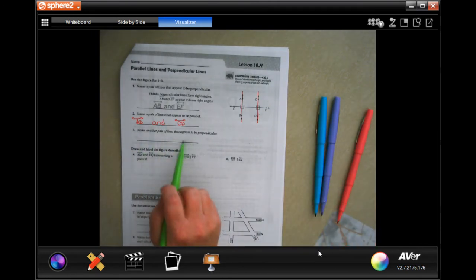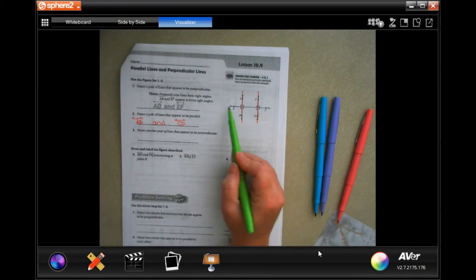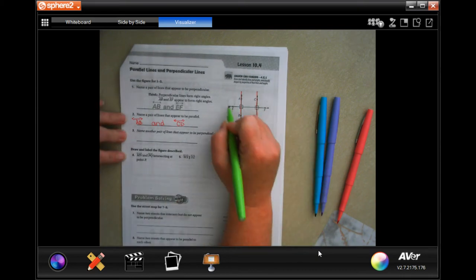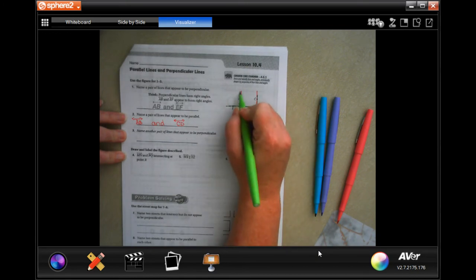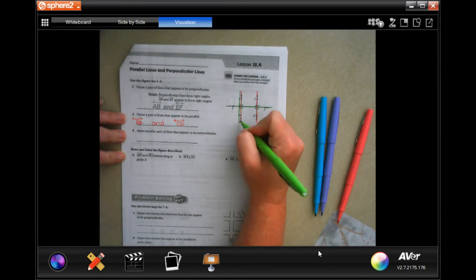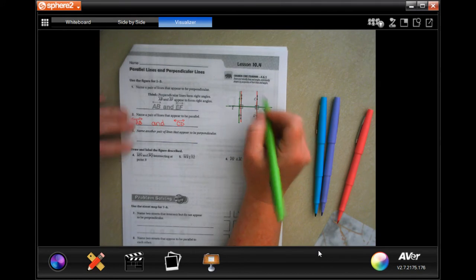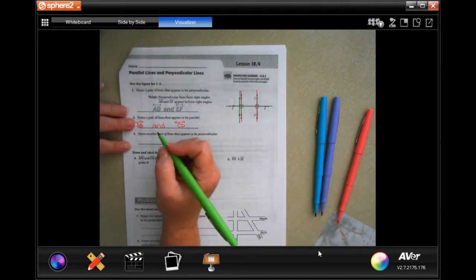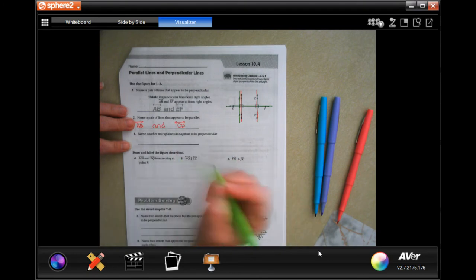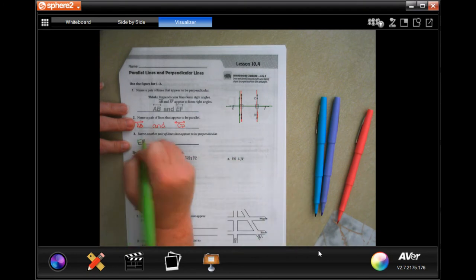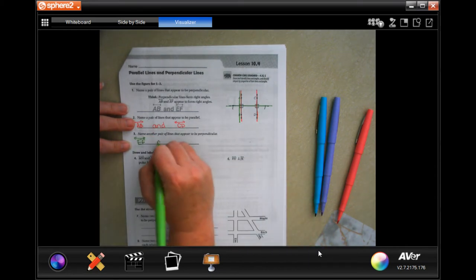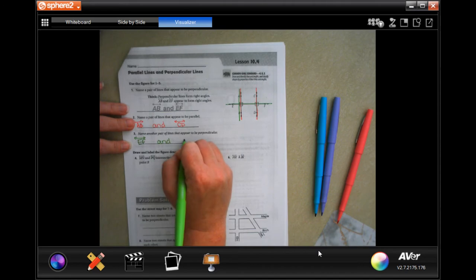Name another pair of lines that appear to be perpendicular. Perpendicular means that they cross. You could do AB and EF, you could do CD and EF, either one is okay. So I'm going to go EF with the line with the two arrows, and I'm going to go CD.